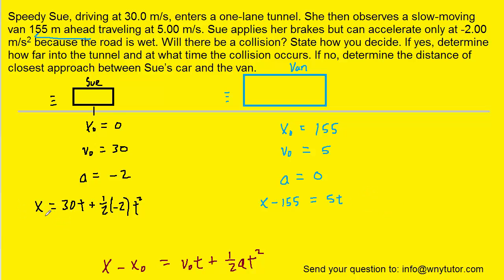So now the Sue equation is already solved for the final position. Let's get the van equation solved for the final position. That way we can set them equal to each other by just adding 155 to both sides. And so now that we've done that, we're going to take the final position of Sue and the final position of the van, and we're going to set them equal to each other to figure out if there's indeed going to be a collision.